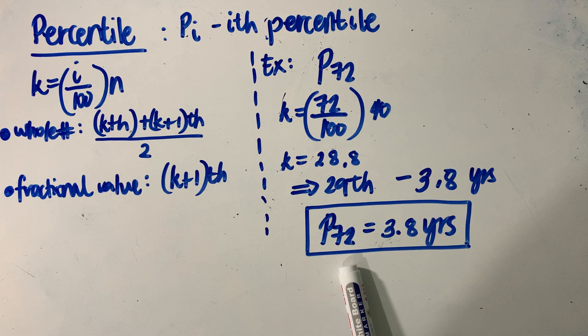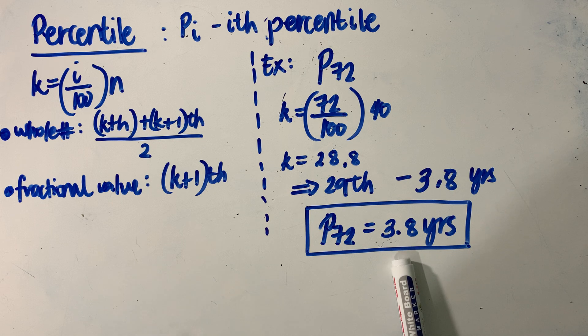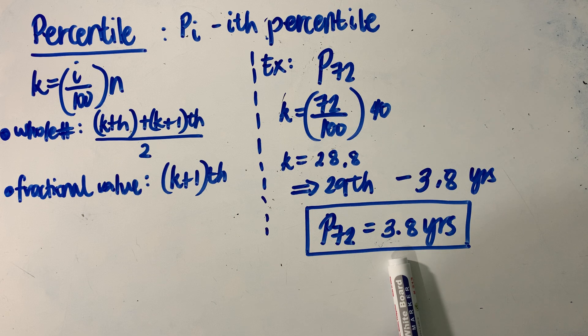we can interpret it this way: 28% of the car batteries will have a lifespan greater than 3.8 years. That is another way of looking at the concept of percentile.